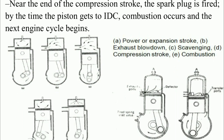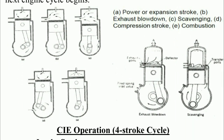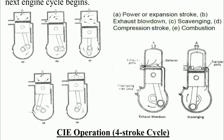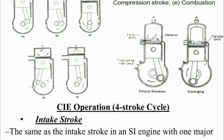The two-stroke cycle process summary: A — power or expansion stroke, B — exhaust blowdown, C — scavenging, D — compression stroke, and E — combustion. In the corner figures, the first illustrates exhaust blowdown and the next shows scavenging, with the transfer ports visible.